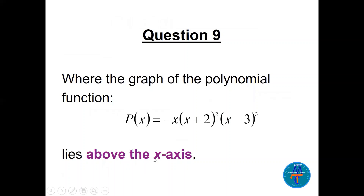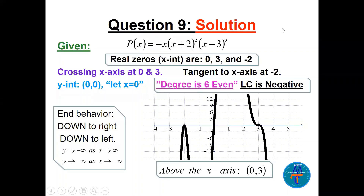Question 9: find where the polynomial graph is above the x-axis. The real zeros (x-intercepts) are 0, 3, and -2. At x=-2 the graph is tangent (even multiplicity), crossing at 0 and 3. The degree is 6 (3+2+1) with a negative leading coefficient, so the graph goes down on both ends. The graph is above the x-axis only on the open interval (0, 3).